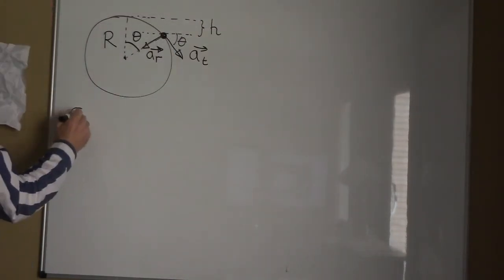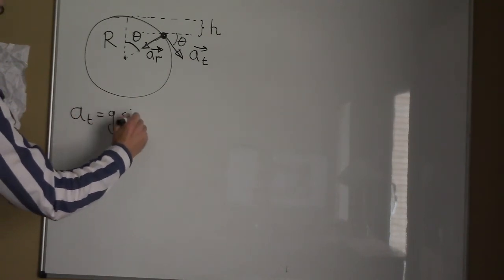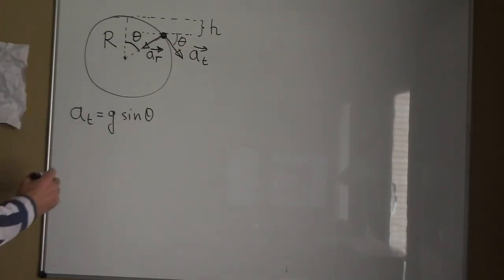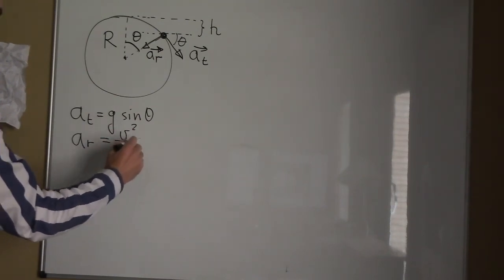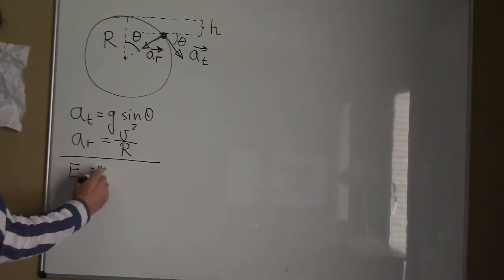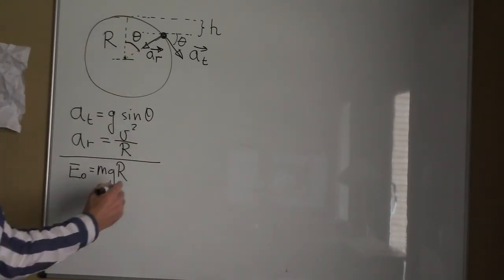The tangential acceleration is g sin of theta. The radial acceleration will be the centripetal acceleration, v square over r, which using the conservation of energy...